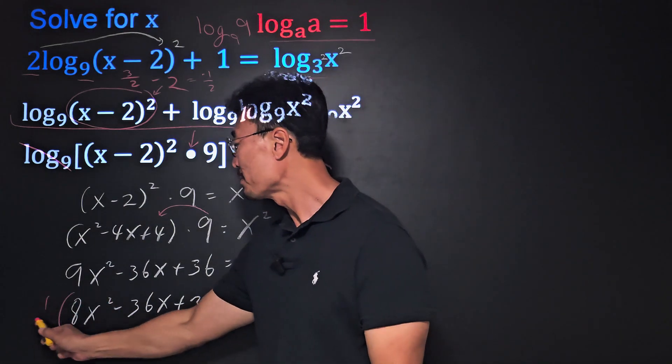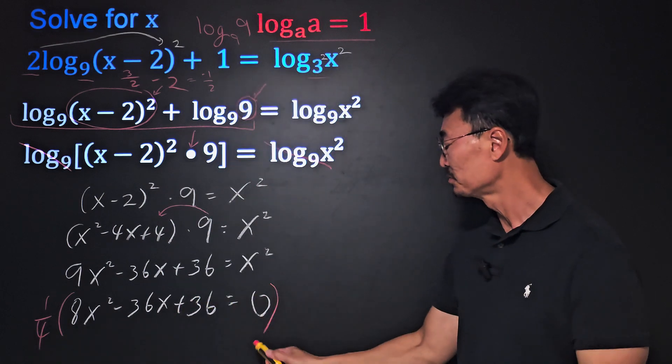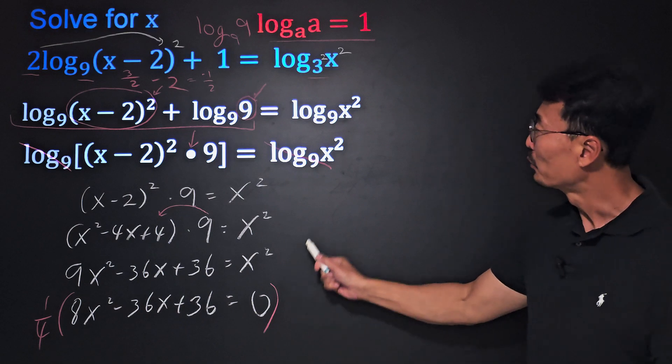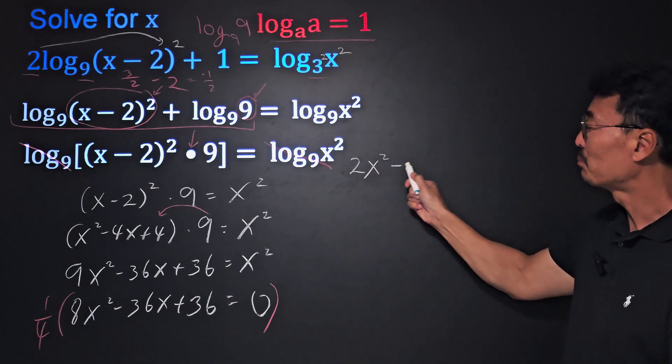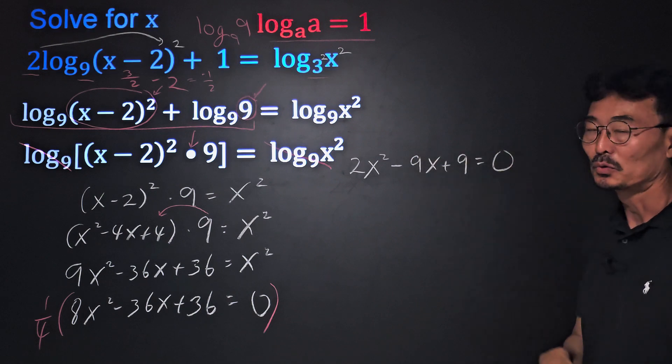And here we're going to multiply by 1 over 4 first in order to reduce the numbers, where we end up getting 2x square minus 9x plus 9 equals 0.